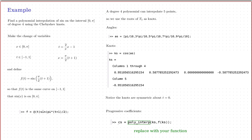Let's use MATLAB to compute the interpolation of the sine function using Chebyshev knots. More specifically, we'll look at the sine function on the interval from zero to pi and use a degree-four polynomial using Chebyshev knots. Because we're working on [0, π] whereas Chebyshev polynomials are defined on [−1, 1], we'll make a change of variables.